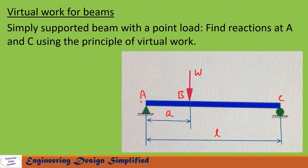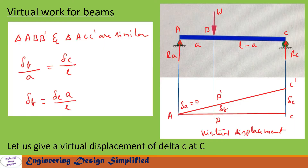In this video I am going to find reactions at C and A using the principle of virtual work. The beam is redrawn here and load W is acting vertically downwards at point B. The distance between A and B is a, and the distance between B and C is L minus a, since the total length of the beam is L. Reaction at A is Ra and reaction at C is Rc, both acting vertically upwards.